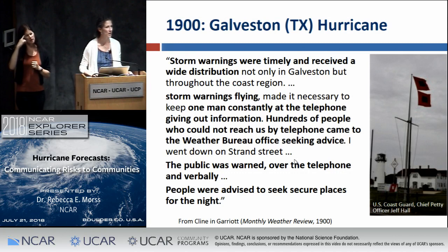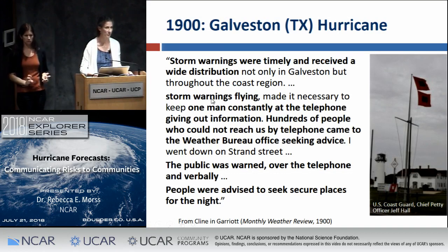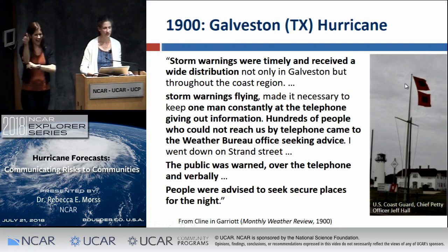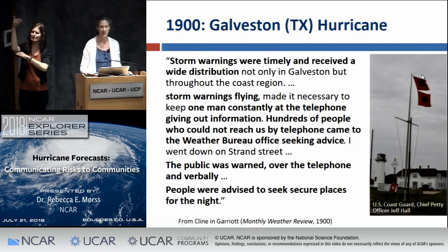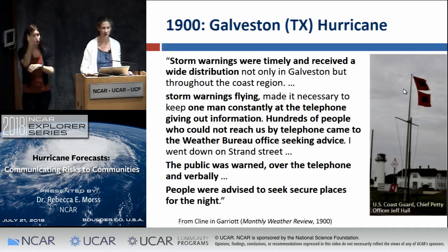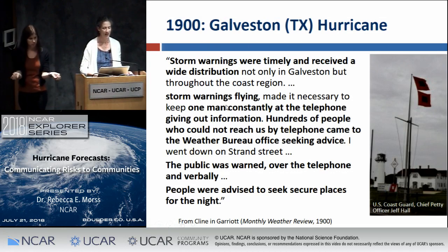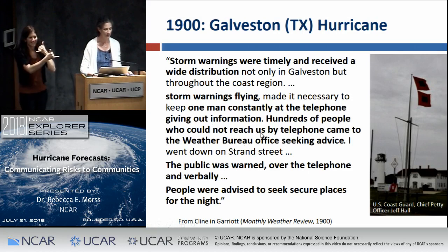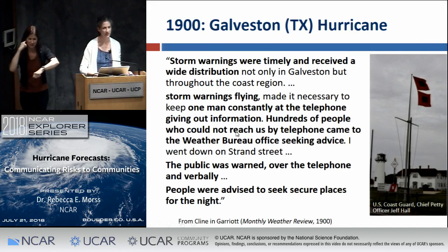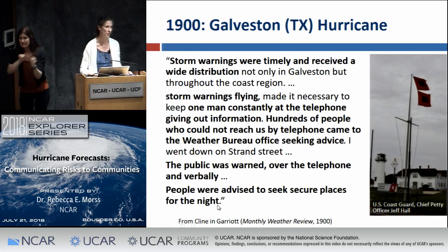If you think back to 1900 and wonder what storm warnings were available — they did have some. Isaac Klein, the main forecaster at the time, said storm warnings were timely and received wide distribution. They had storm flags flying, which is still used today to indicate to mariners and local populations that there's a hurricane. Back then that was a major form of communication — no television, internet, or cell phones. They did have telephones, so someone at the forecast office was constantly on the telephone giving out information. People were warned over telephone and verbally the day of the storm.